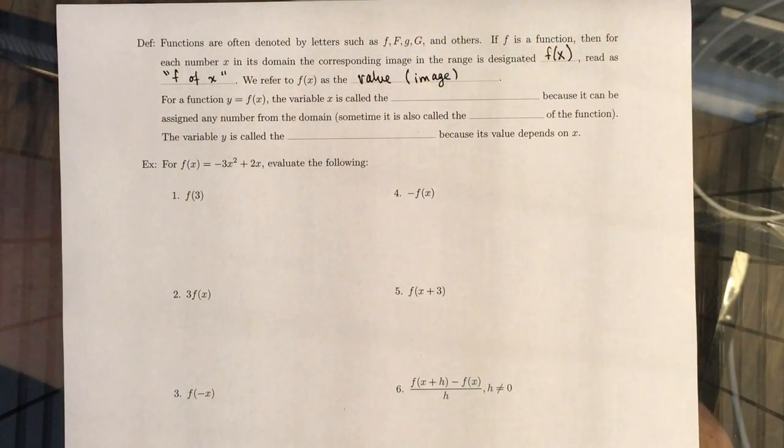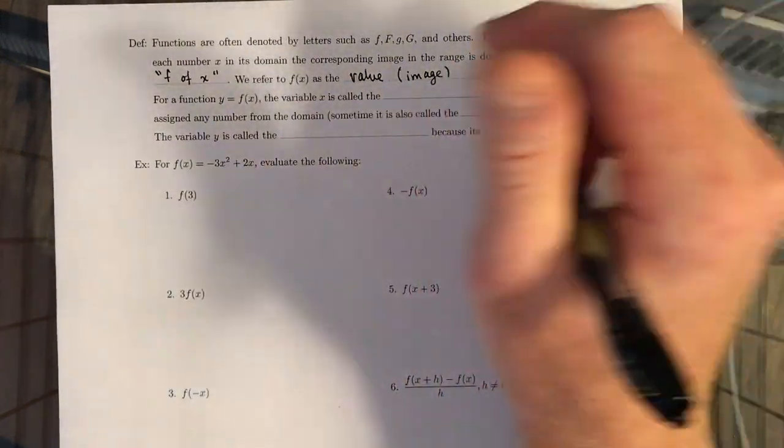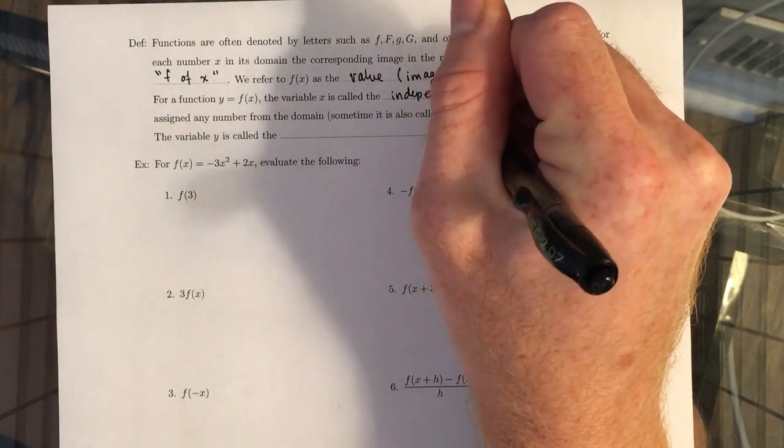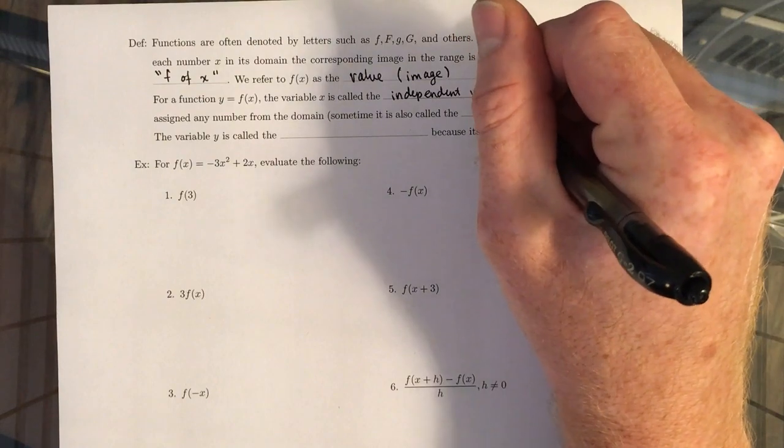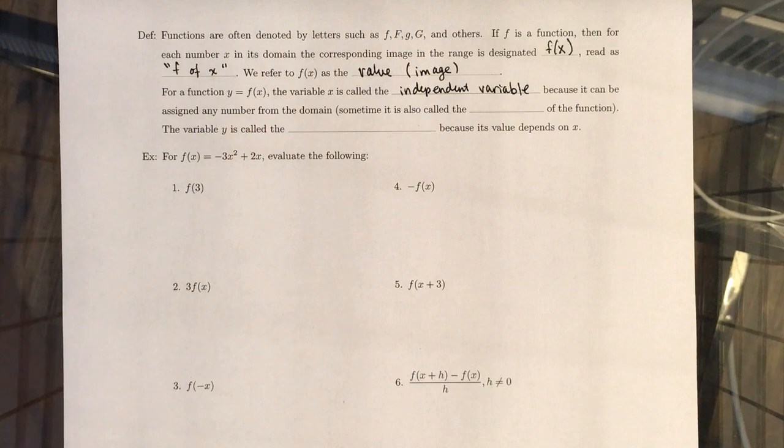So for a function defined by Y equals F of X, the variable X is called the independent variable because it can be assigned any number from the domain.